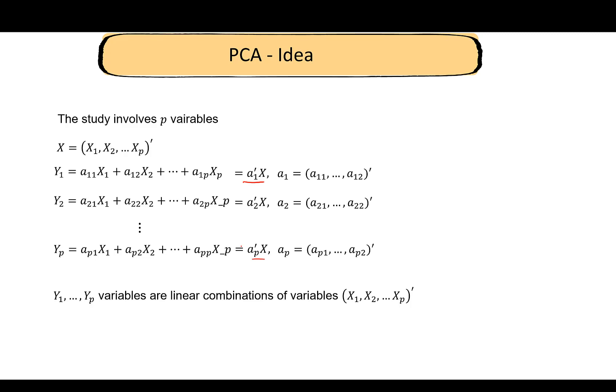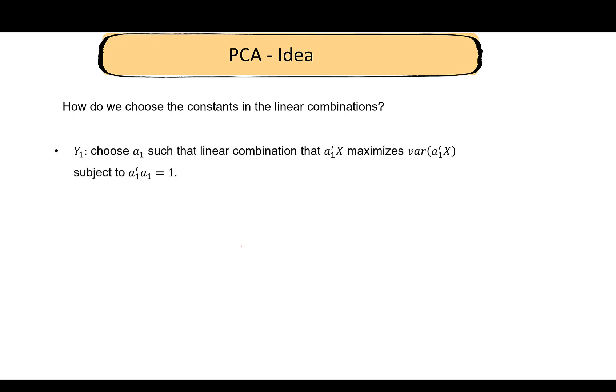How do we choose all of these linear combinations? Remember our goal: reduce dimension, retain variability, and we want uncorrelated variables. So we want to choose all of these constants such that these three conditions are satisfied.